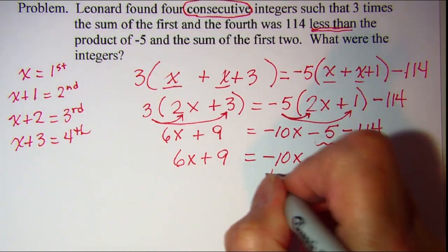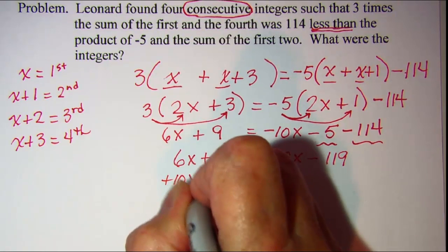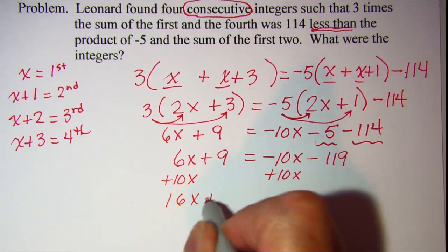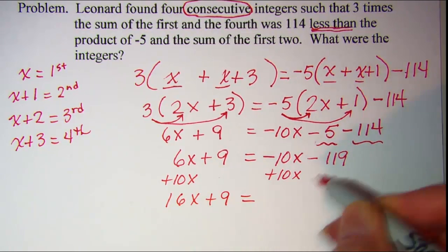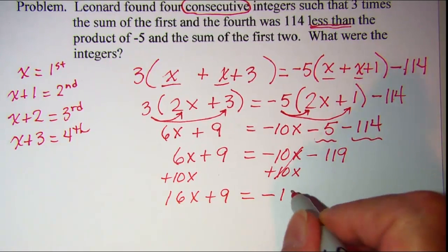Let's add 10x to both sides. And I have 16x plus 9 is equal to, and those cancel, negative 119.